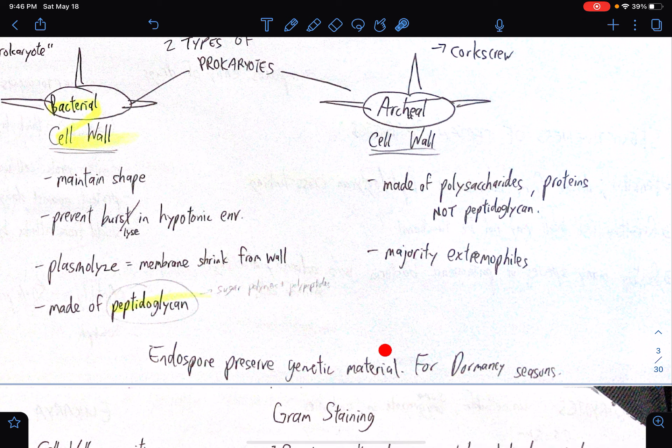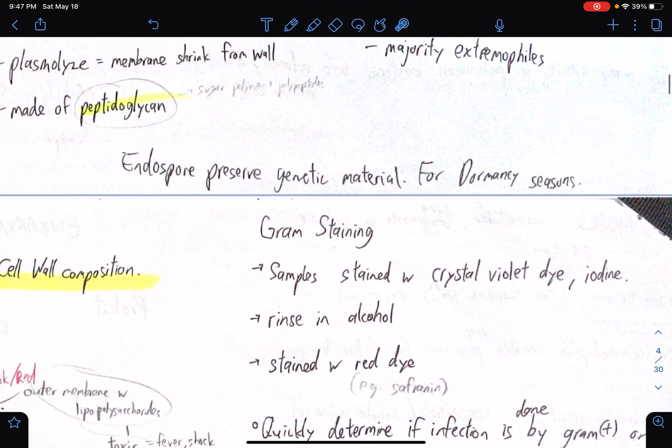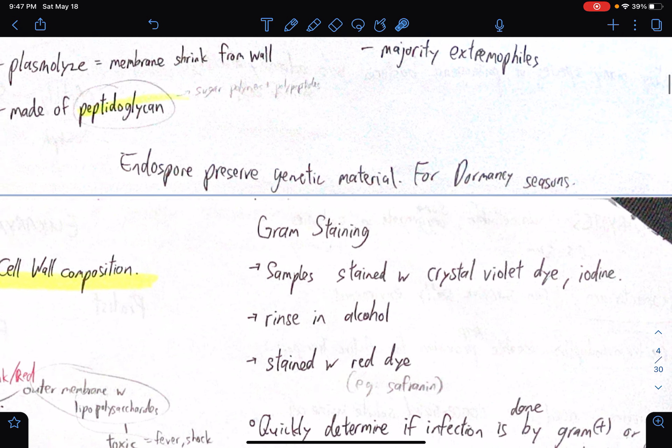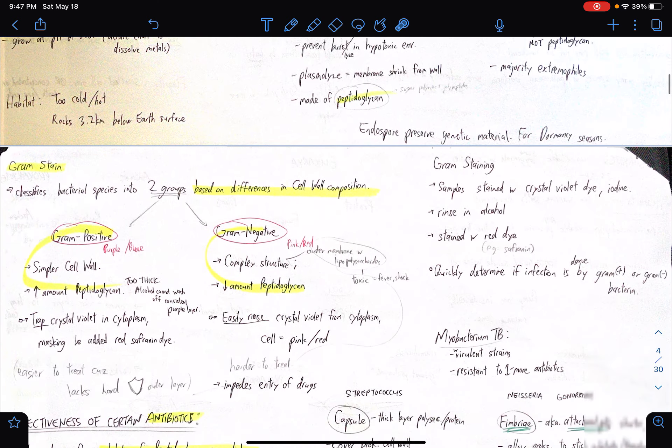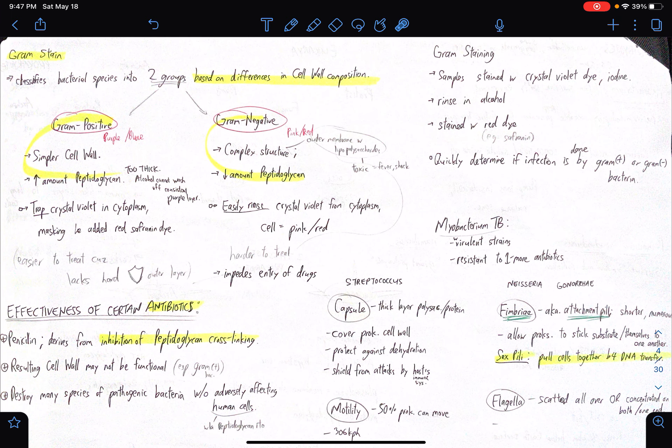And yes, endospore. They preserve genetic material for dormancy seasons. This is also partly the reason why there are certain viruses that may be removed from its state of dormancy. Usually it's in the ice. So yes, just to mention that to you, connecting that idea to what we're talking about right now. The endospore is a very important part for prokaryotes. It I think it has something to do with also the reproductive system and the spores. Gametophyte, sporophyte. Yeah, that will be when we go to plants. But for now, yeah, I think that's it.